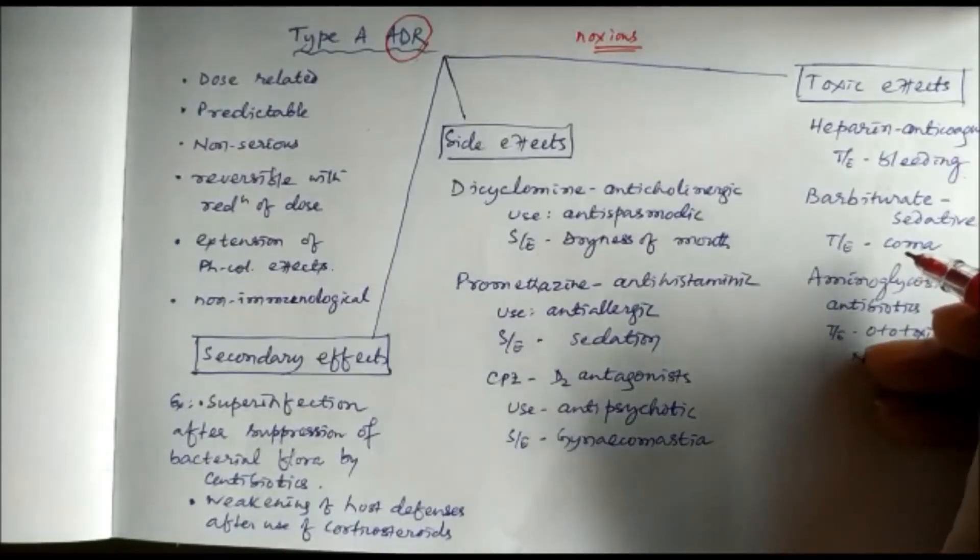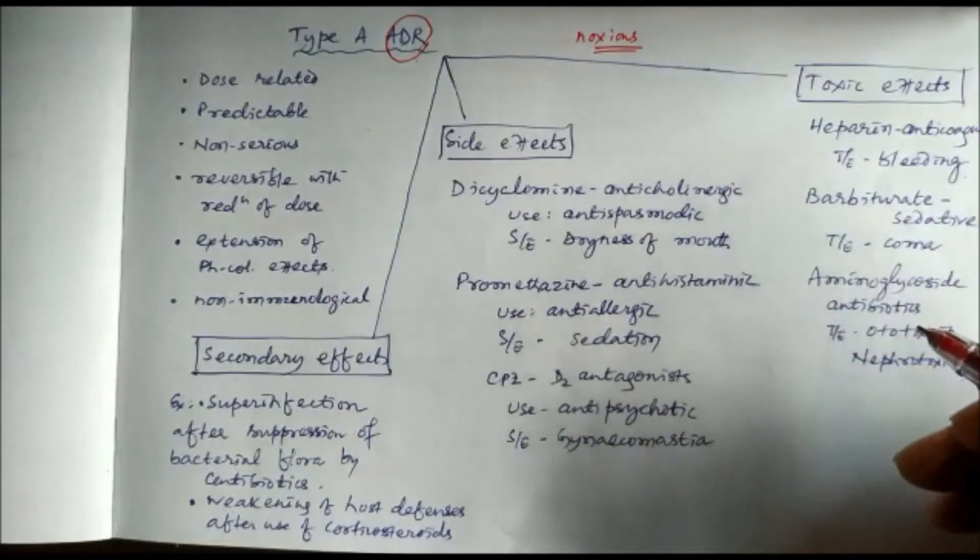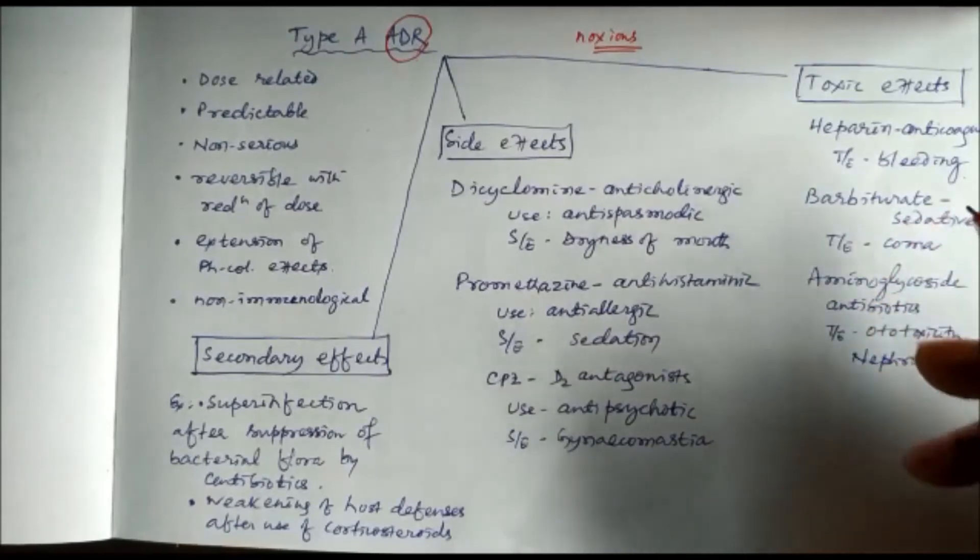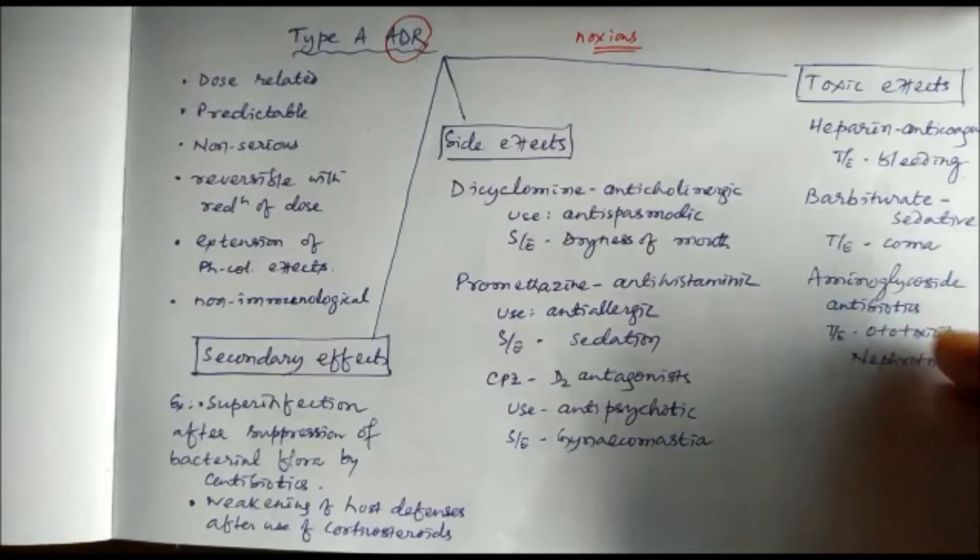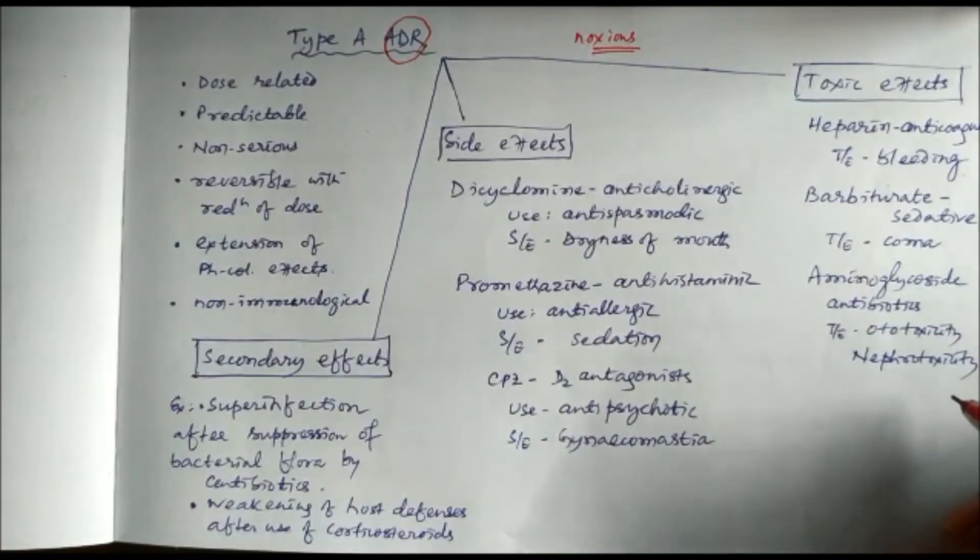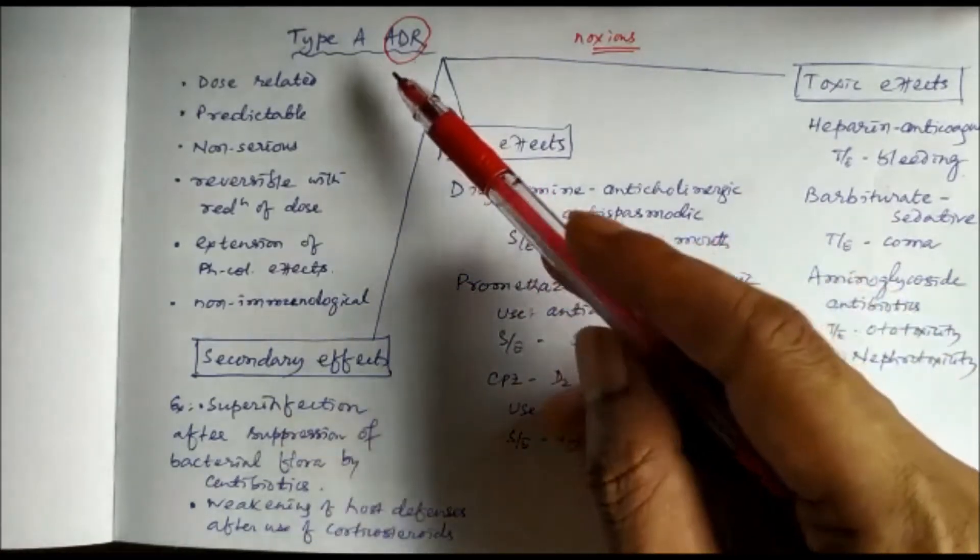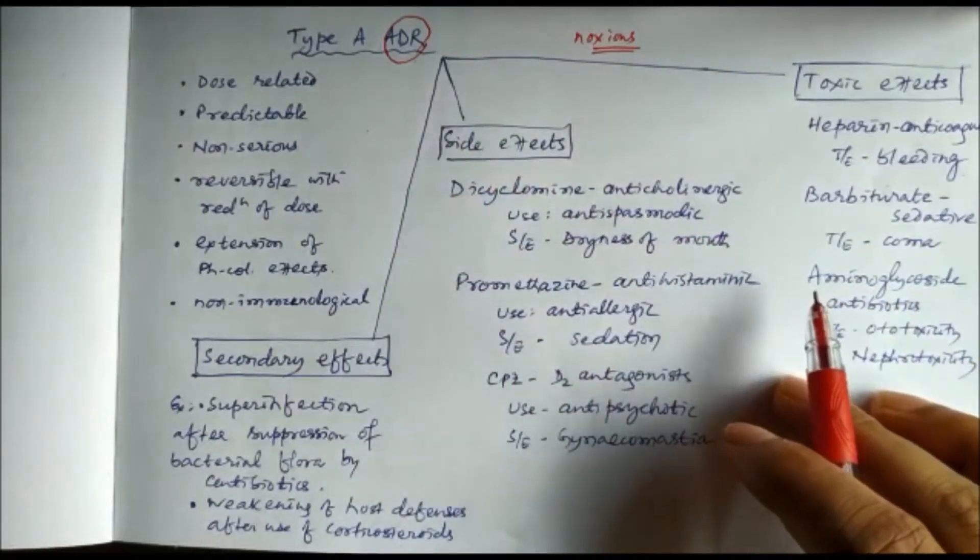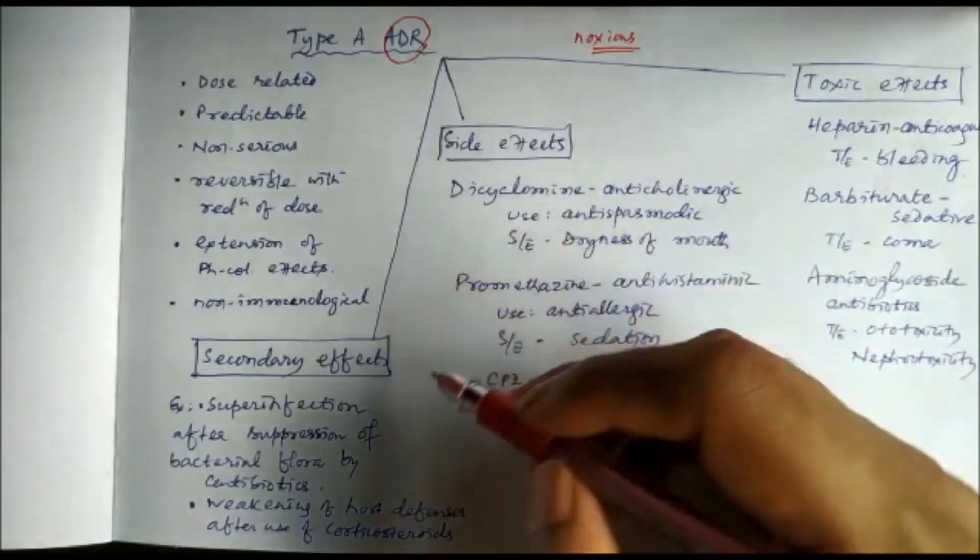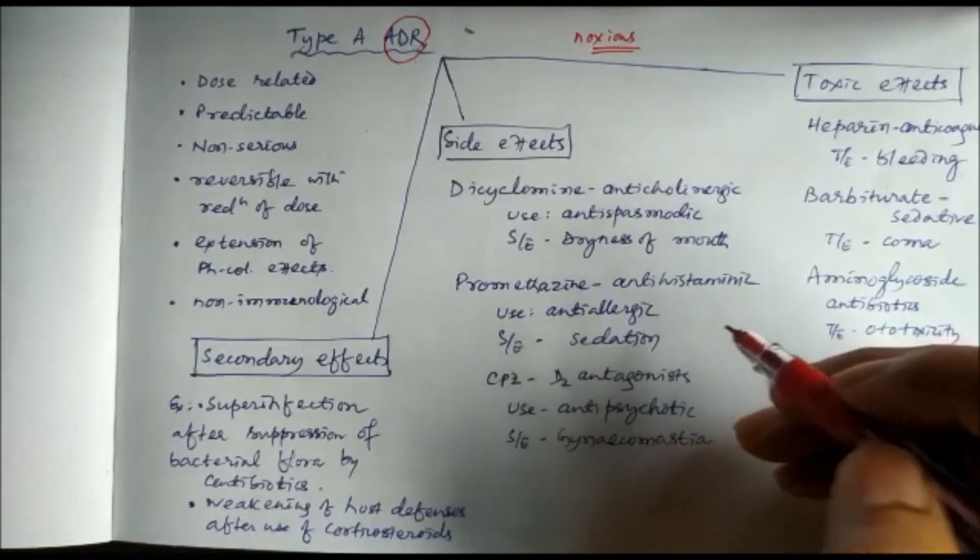All the toxic effects are usually noxious and harmful, so they come under Type A adverse drug reactions. These toxic effects can be caused by intentional overdose by the person, or during disease like hepatic disease or renal failure. In those cases, drug elimination is not possible and the drug gets accumulated causing toxic effects. Examples include bleeding caused by heparin, coma caused by barbiturates, ototoxicity and nephrotoxicity caused by aminoglycoside antibiotics. Similarly, some secondary effects can also come under Type A adverse drug reactions, like corticosteroids causing immunosuppression and broad-spectrum antibiotics like tetracycline causing super-infection because of the loss of bacterial flora.